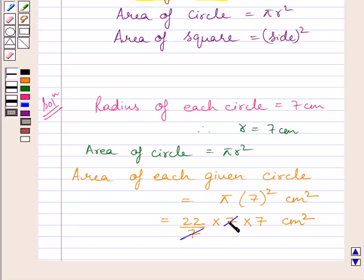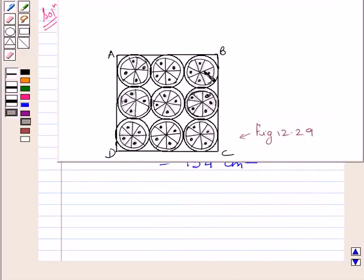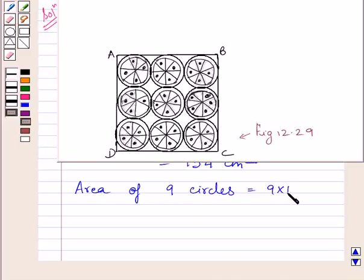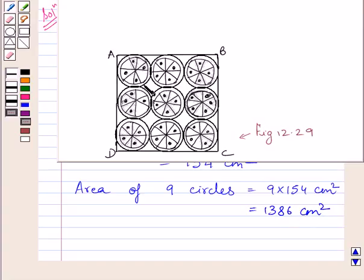We know there are 9 circular designs. So, area of 9 circles is equal to 9 multiplied by 154 cm square. Multiplying these two terms, we get 1386 cm square. So, the area of these 9 circular designs is equal to 1386 cm square.